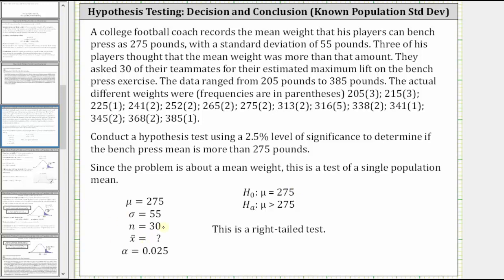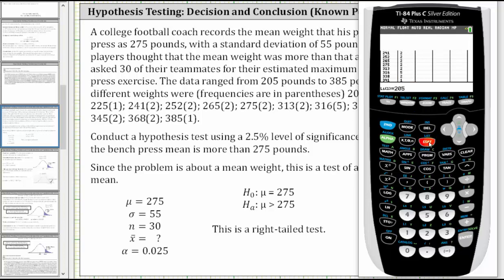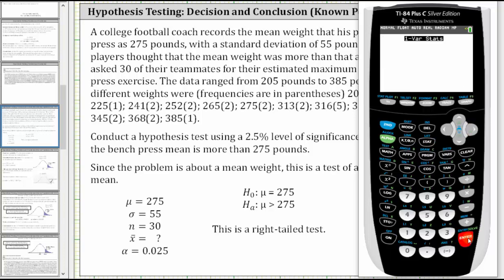Now let's find the sample mean using the TI-84. We will enter the different data items in L1 and the frequencies in L2, which I've already done to save time. To enter data, press STAT, then ENTER. I have the data values in L1 and the frequencies in L2. To find the sample mean, press STAT, right arrow to CALC, option one: one-var stats. Press ENTER. The data list is in L1, the frequency list is in L2. Press ENTER, then ENTER on calculate. X-bar gives us the mean.